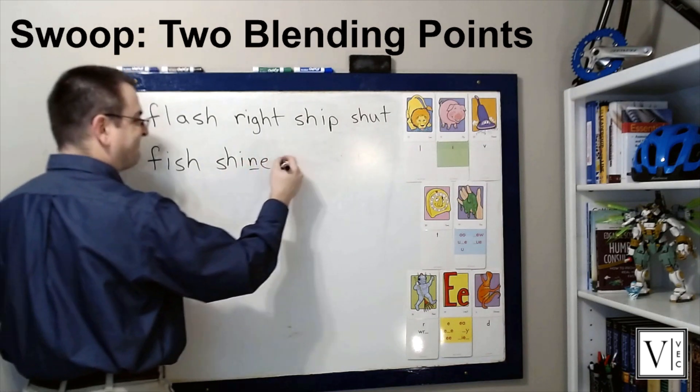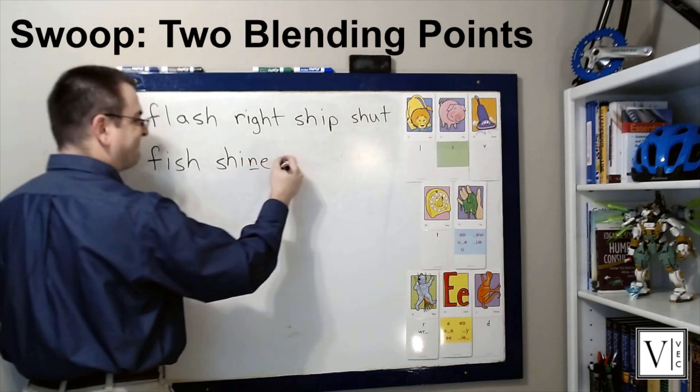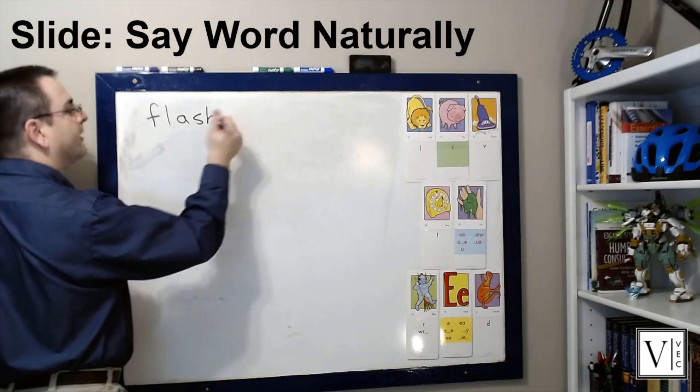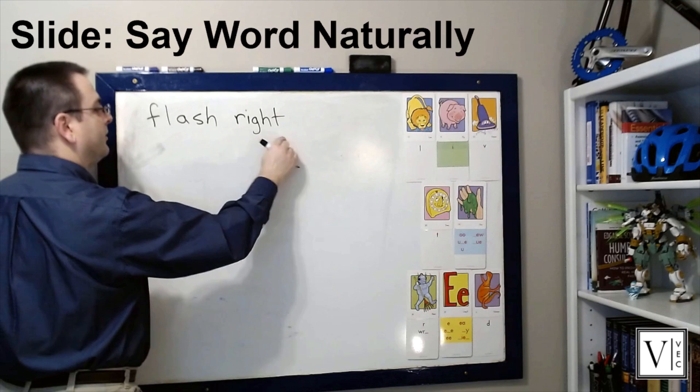Then you finish the word and ask the students to blend again through the entire word before you ask them to say the word naturally. To cue the students to say the word naturally, simply put your finger at the bottom left of the word, then slide a straight line all the way below the word.